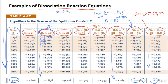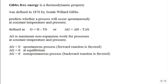The Gibbs free energy is a thermodynamic property. How many properties do we know? We know pressure, temperature, specific volume, internal energy, enthalpy, entropy, flow exergy, and now G — Gibbs free energy — which is another thermodynamic property.